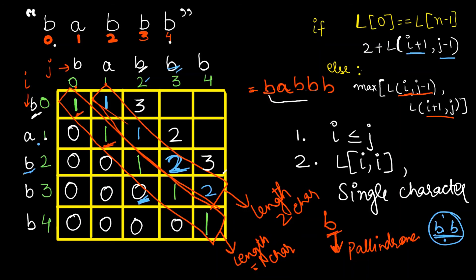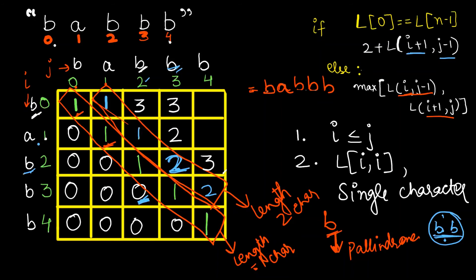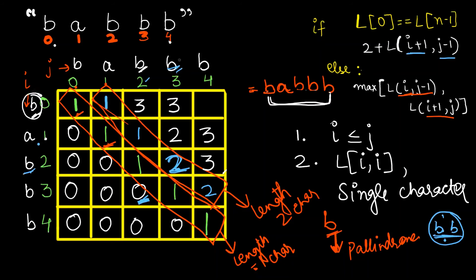For four-length characters, B,A,B,B: is B matching B? Yes — look at diagonal (1,3) which is 2, add 2, giving 3 for position 0,3. For A,B,B: A not matching B, take max of left and bottom which is 1. For all five characters: B matching B at 0,4 — diagonal (1,3) is 2, add 2, giving 4. So the longest palindromic subsequence is of length 4.